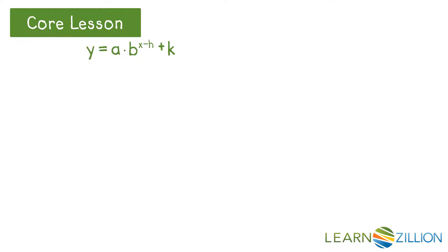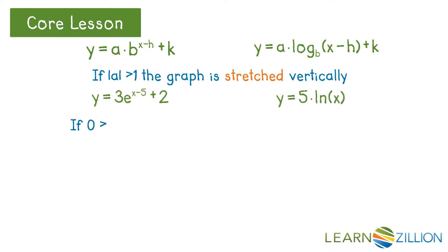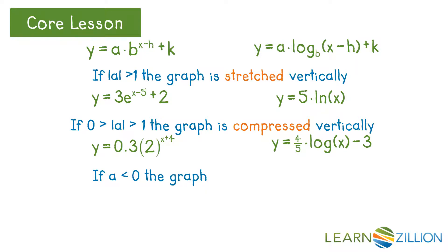The characteristics we have just seen with exponential functions also apply to the graphs of logarithms. If the absolute value of a is greater than 1, the graph is stretched vertically. If a is between 0 and 1, the graph is compressed vertically. And if a is negative, the graph is reflected vertically.